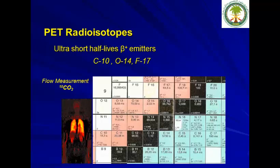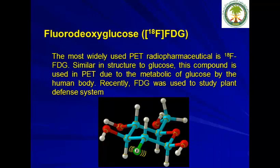There are also ultra short-lived PET radioisotopes including carbon-11, carbon-10, oxygen-14, and fluorine-17, which were used in humans a long time ago. Fluorodeoxyglucose, named the molecule of the century, is heavily used in all PET centers around the world. It has a similar structure to glucose and is used in PET due to glucose metabolism in the human body. Recently, FDG was also used to study plant defense systems.